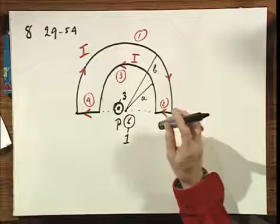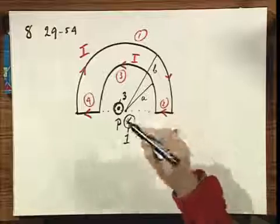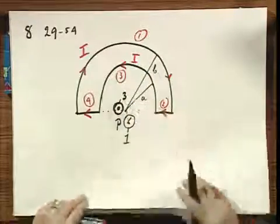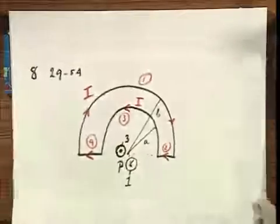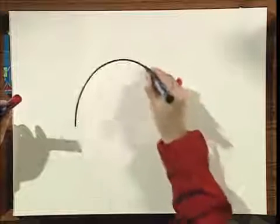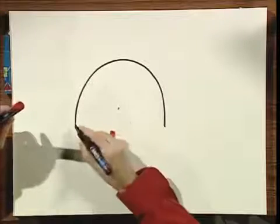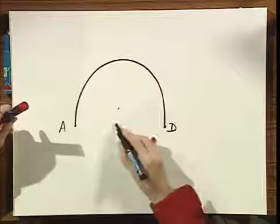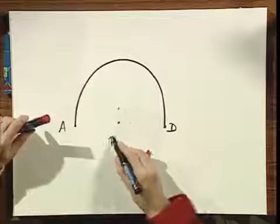Well, what I propose to do is to simply calculate for you the magnetic field of one arc, and then I'm sure that you can do the superposition of both arcs. So here's one arc, I call this point A, and I call this D, and this is the center, this is P.